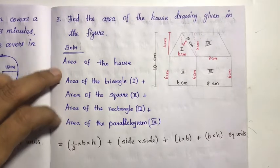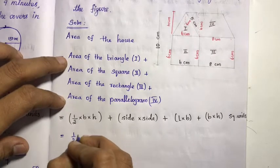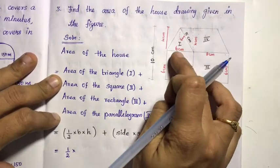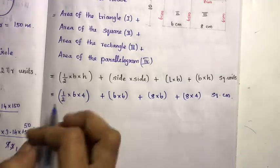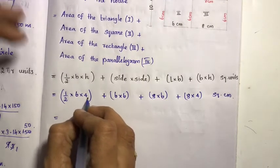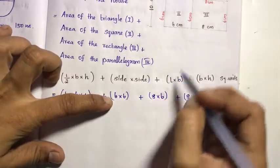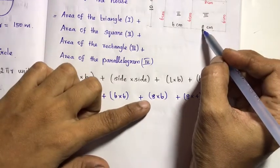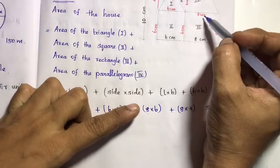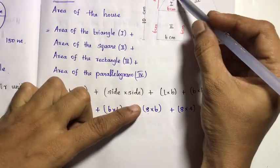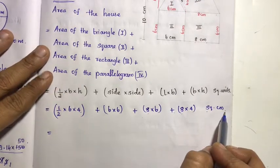Solution. Area of the triangle formula is half into base into height. Substituting values: one-half into 6 into 4 for the triangle. Plus 6 into 6 for the square. Plus 8 into 6 for the rectangle. Plus 8 into 4 for the parallelogram. Units are square centimetres.